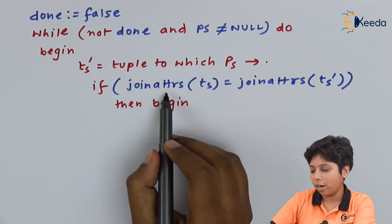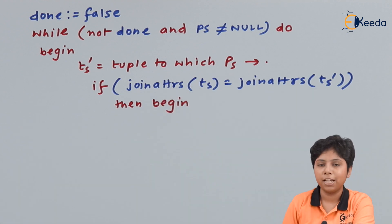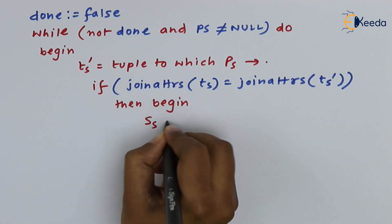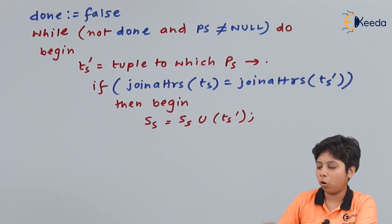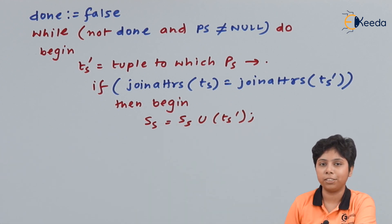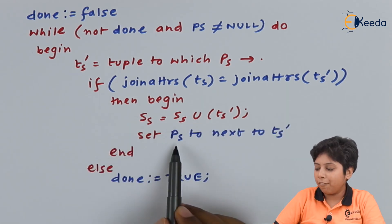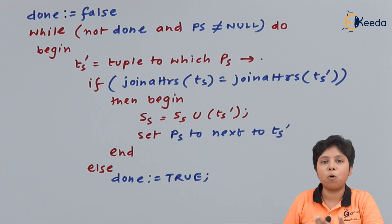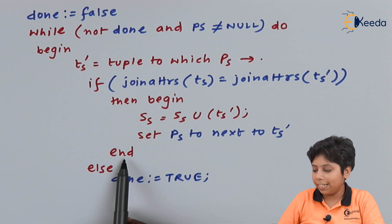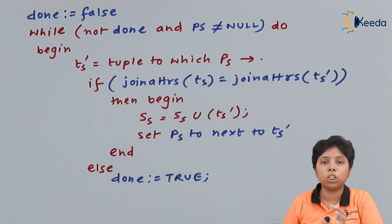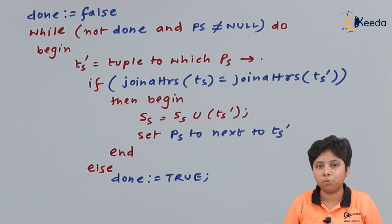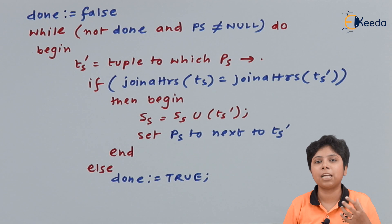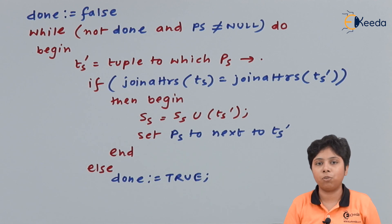If the ts join attributes equals the ts-dash join attributes, then we add all ts-dash tuples to our set s. After that we set ps to the next ts-dash — the pointer moves to the next tuple. If there is no match on the joining attribute of ts with the joining attribute of ts-dash, that means we are already finished — there are no other tuples left in this tuple set ss other than what we previously gathered. Now we need to handle the outer relation, which works similarly to this inner relation.